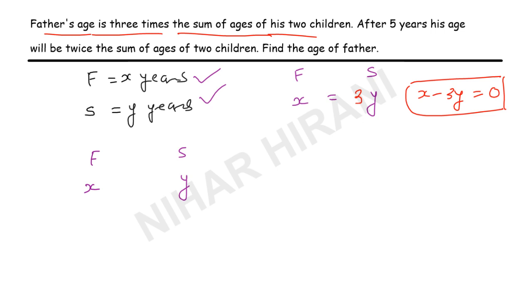After five years, the father's age increases by five. Since we are talking about two children, each child increases by five, so the sum of their ages increases by ten. After five years, the father's age will be twice the sum of the ages of his two children.